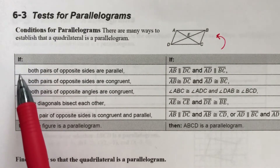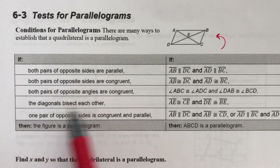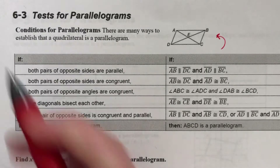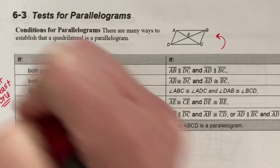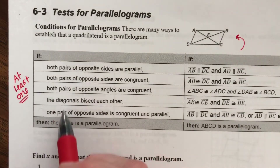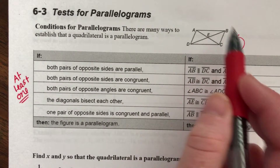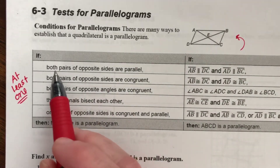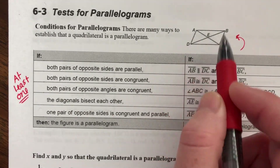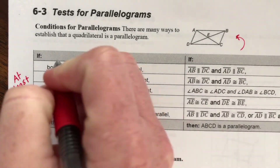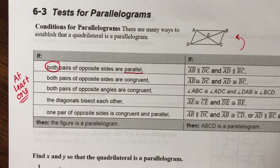If at least one of these conditions is true — it does not have to be all of them, just one or more — then a four-sided shape is a parallelogram. First: both pairs of opposite sides are parallel. This pair of opposite sides has to be parallel, and this pair of opposite sides has to be parallel. If that's true, then we know it's a parallelogram.